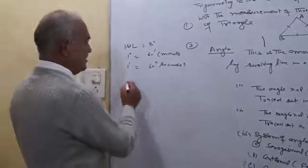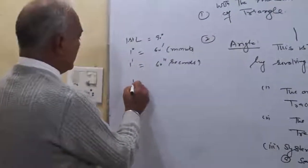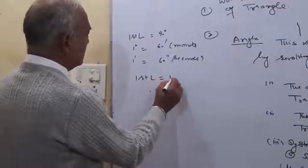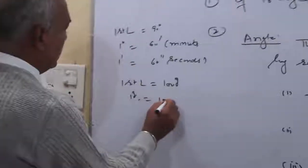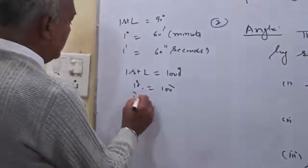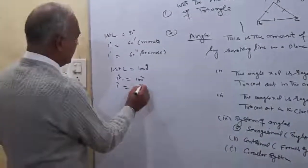In the centesimal system, the French system, one right angle equals 100 grades, one grade equals 100 minutes, and one minute equals 100 seconds.